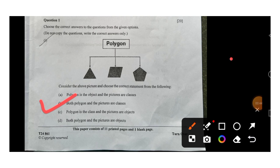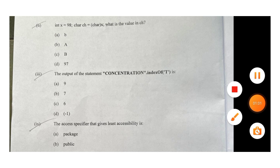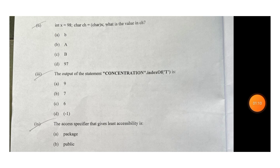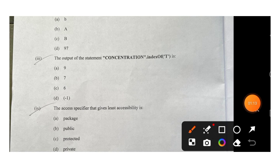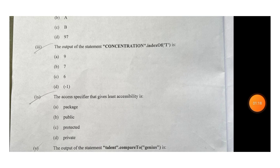Question two: int x equals 98, char ch equals (char) x — this is an explicit conversion. 98 represents which character? It is the small letter 'b'. So what will be stored is 'b'. Option A will be correct.